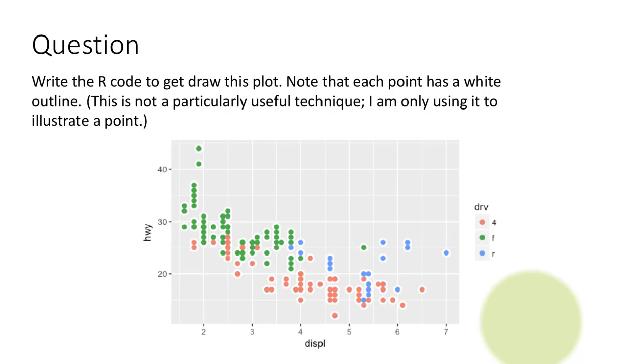Here what you're seeing is that this is a scatter plot. The points are somewhat big and each point is colored depending upon drive. So all of this is fine, you can do that now. But what you're also seeing is that there's a sort of white border around each point.